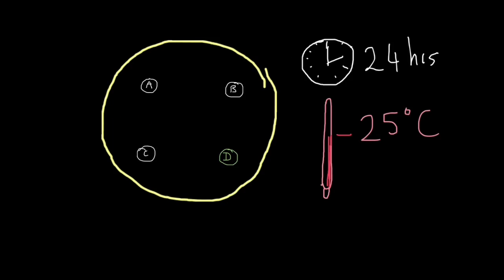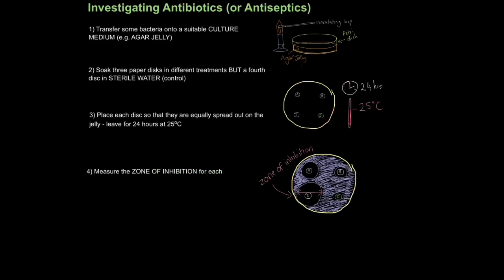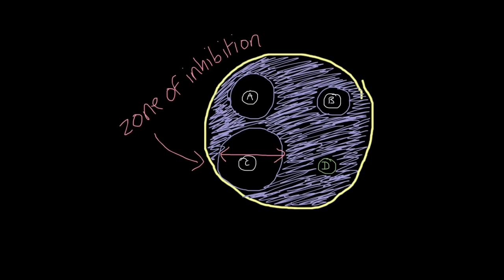This is a top view of our agar plate with the paper discs — antibiotic A, B, C, and the water control. After 24 hours, all you have to do is measure the zone of inhibition and compare it for each antibiotic. The antibiotic diffuses into the agar and kills bacteria where it reaches. The one which kills the most bacteria — producing the largest zone of inhibition — is the most powerful antibiotic against that specific bacteria. You can see that antibiotic A has the largest diameter, making it the most effective, while B is the least effective, and the control hasn't killed any bacteria, as expected.